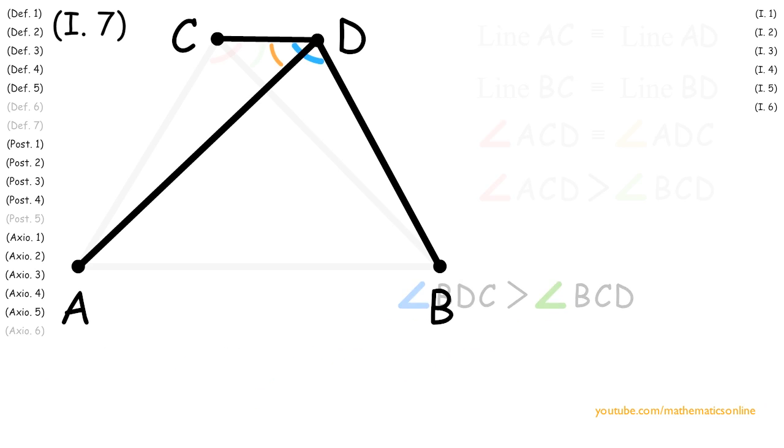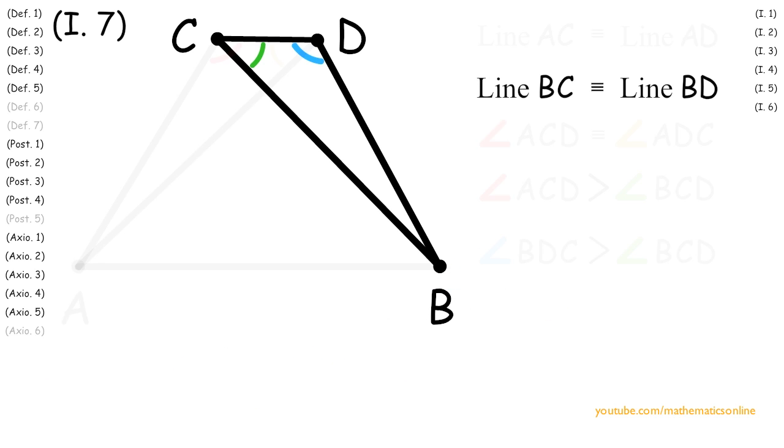Next, since triangle BCD has two sides that are congruent, then by Proposition 5 angle BDC is congruent to angle BCD.